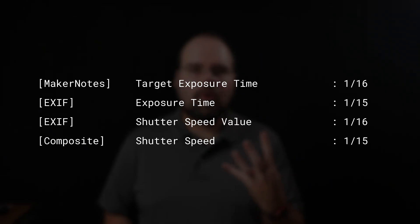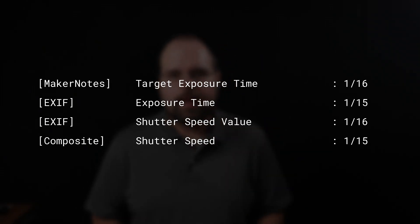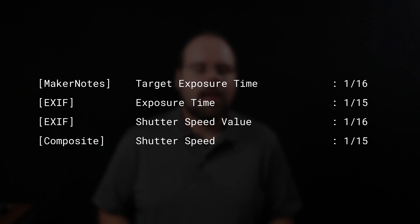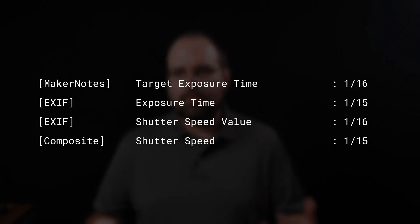In Canon video and still files, I found four different exposure time settings stored in the metadata. Some of those were the numbers you'd expect — one four-thousandth, one sixtieth, etc. The others were these off numbers — the one forty-ninety-sixth, or one sixty-fourth — that prompted this whole discussion.